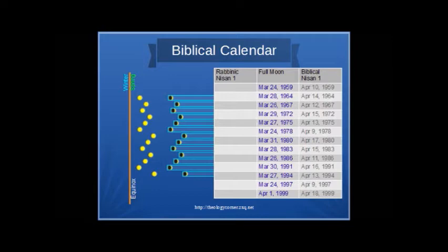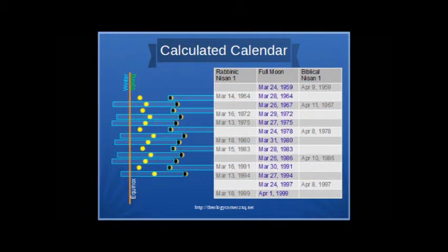Now let's see what the calculated calendar looks like. This is all over the map. As you can see, not any one criteria is being used consistently.